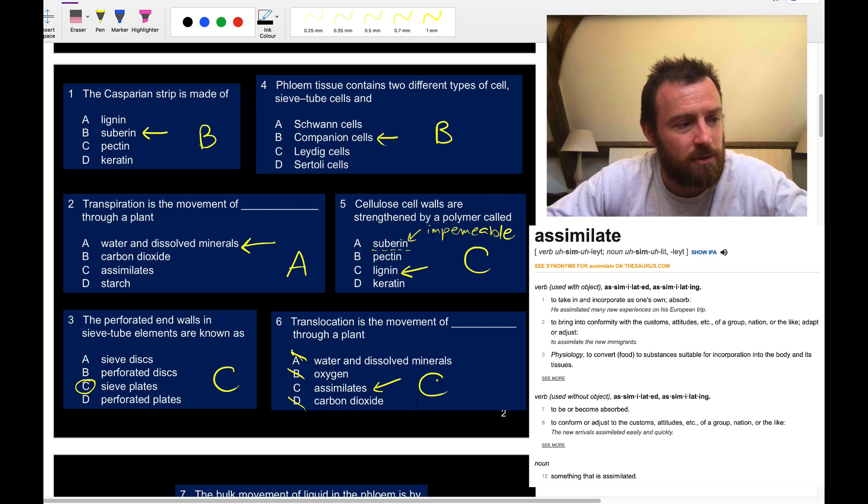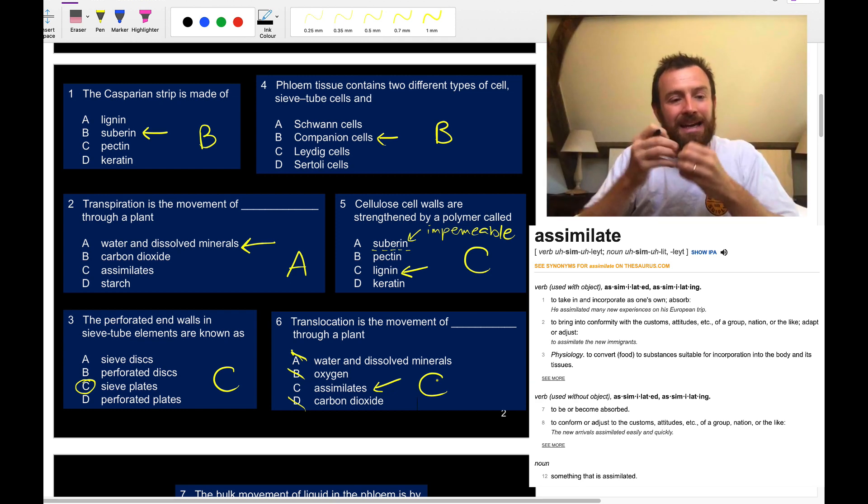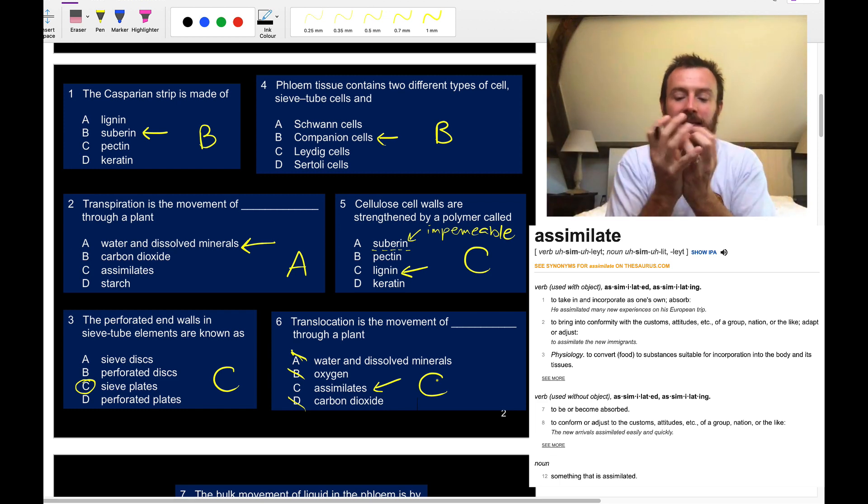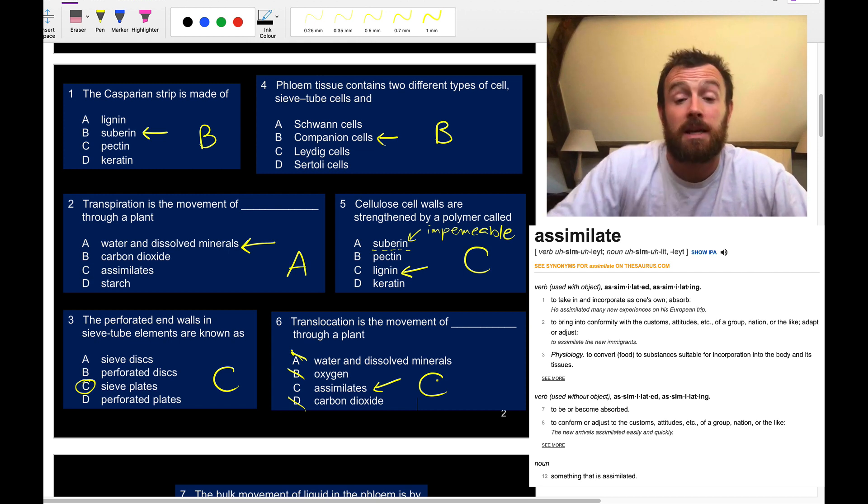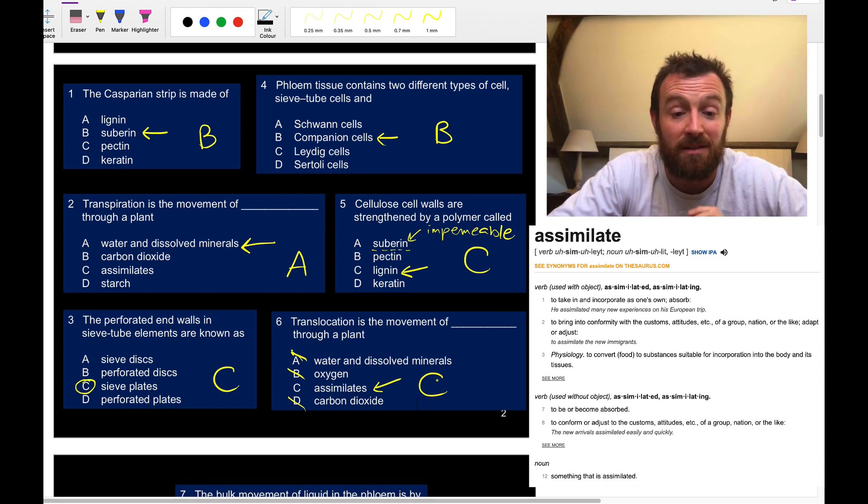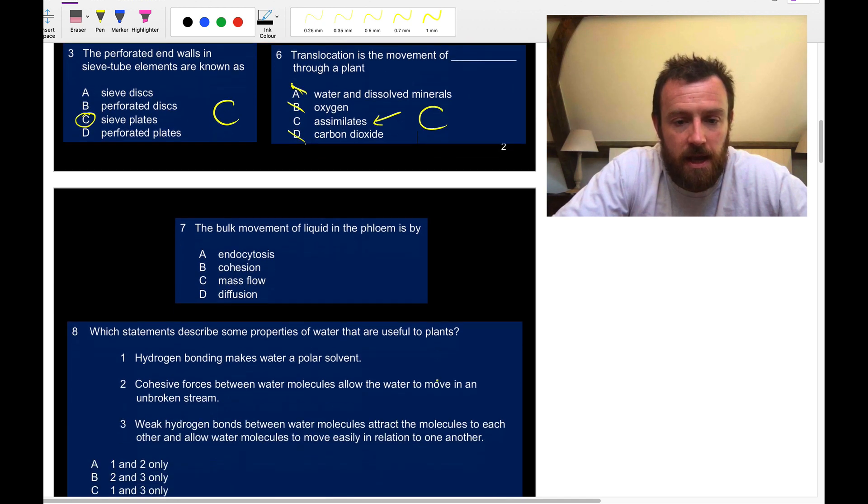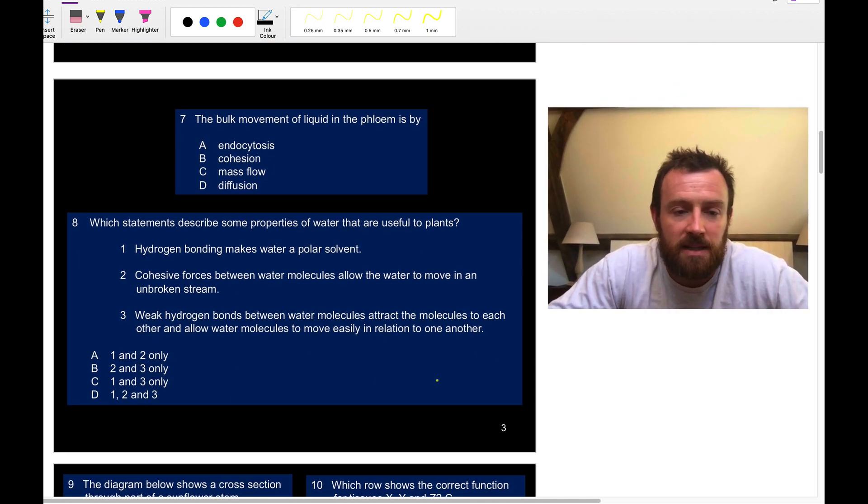Translocation is the movement of assimilates through a plant. Assimilates are things that the plant has assimilated - things that plants have created by assimilating carbon dioxide and water into sugar and other things. Plants make glucose in photosynthesis, but then that can be converted into sucrose, which is glucose plus fructose. We've also got things like amino acids which the plant manufactures for itself and then it's transported around the plant in the phloem. Now let's move on to these questions here, pause if you need to do these questions, come back in a sec.